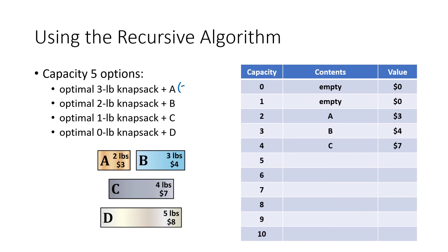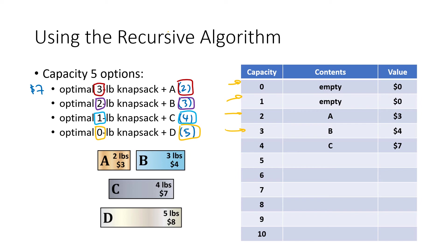For capacity-five options, subtracting the weights of A, B, C, and D from five gives remainders of three, two, one, and zero. The optimal three-pound knapsack (B) plus A = seven dollars. The optimal two-pound (A) plus B = seven dollars. The optimal one-pound (empty) plus C = seven dollars. But the optimal zero-pound (empty) plus D = eight dollars. Eight dollars is the biggest, so the optimal five-pound knapsack is a single D worth eight dollars.